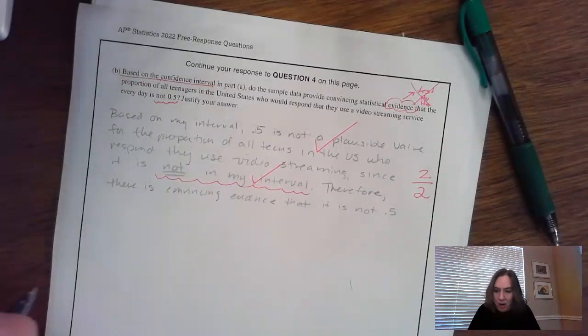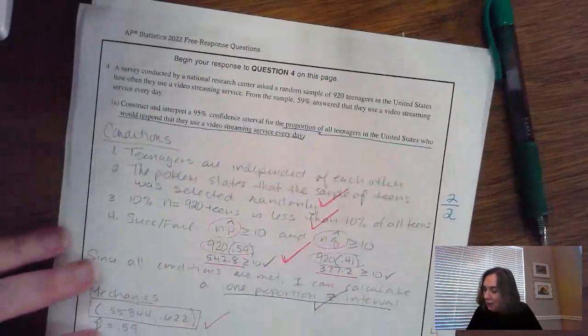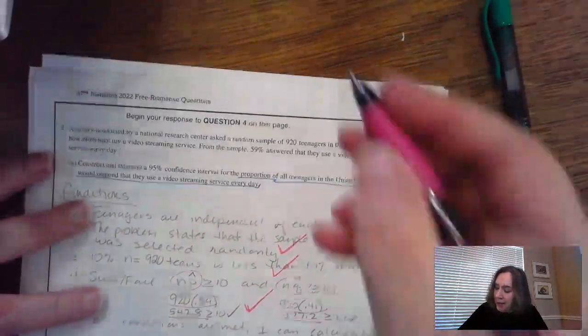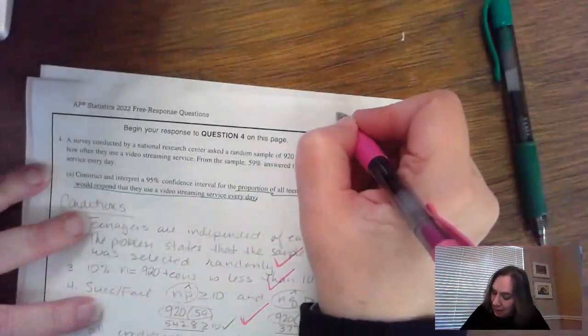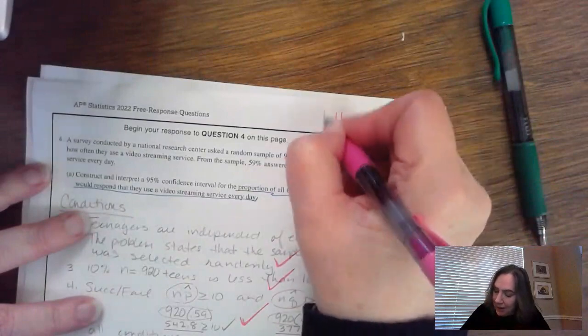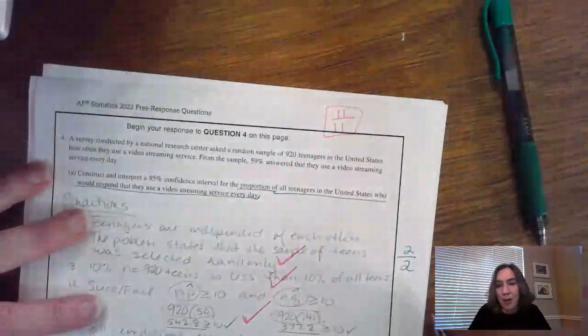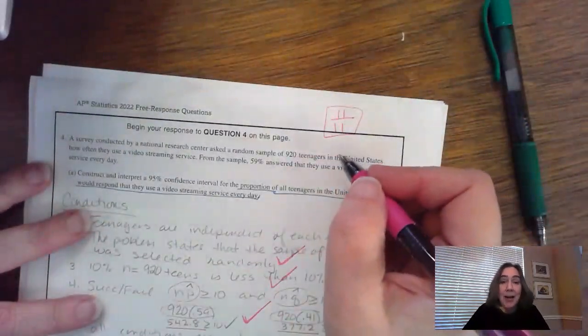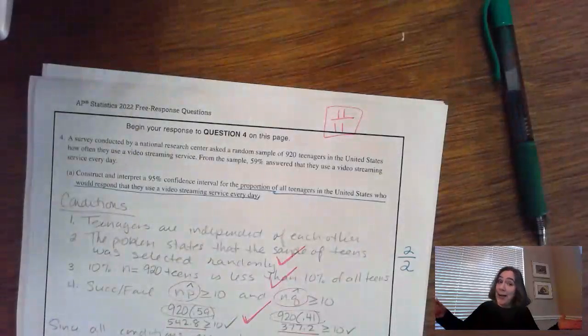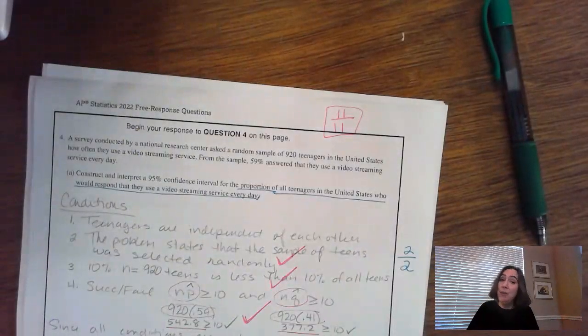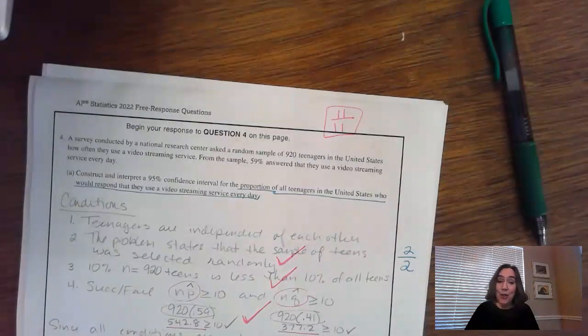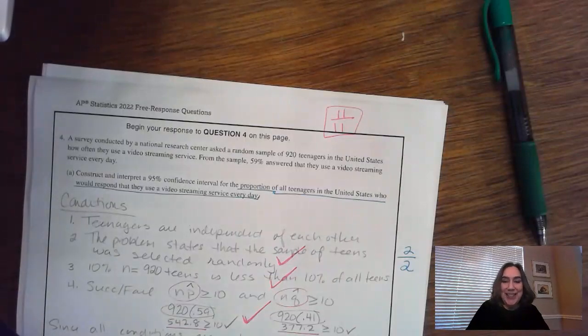So that means overall in this problem, there are 11 check marks right here. That means that in this case, this person got 11 out of 11. So make sure you put that on your paper, put a box around it. And now we have finished grading our inference question from the year 2022. Thanks so much. See you next time.